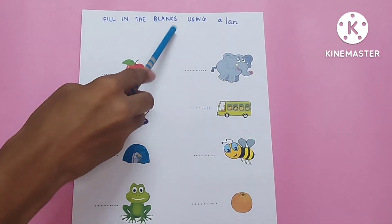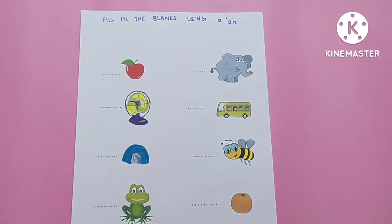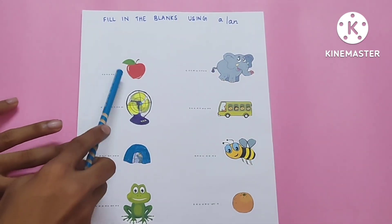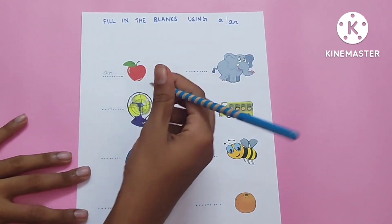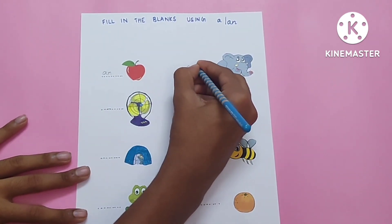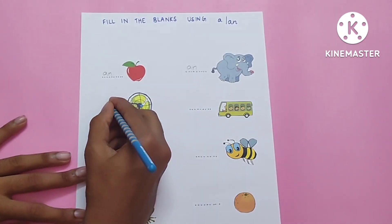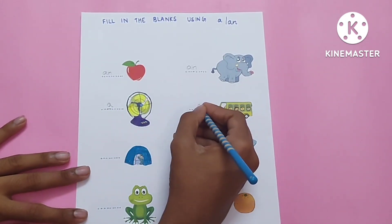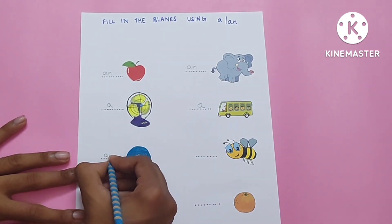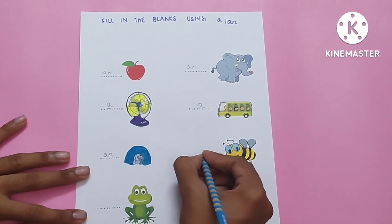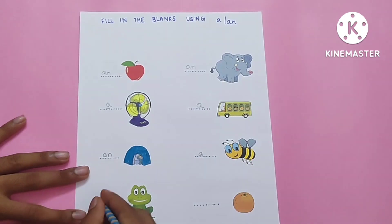Fill in the blanks using A or AN. An apple, an elephant, a fan, a bus, an igloo, a bee, a frog, an orange.